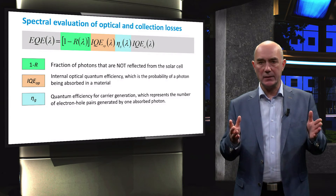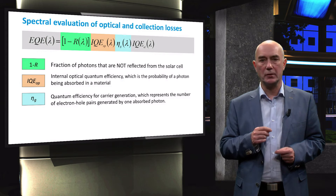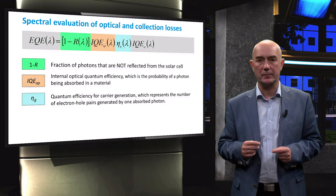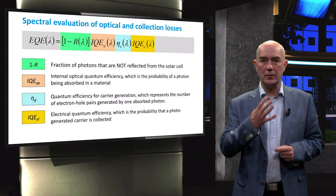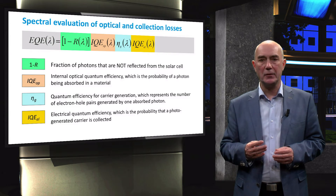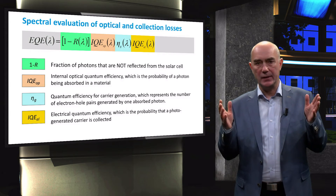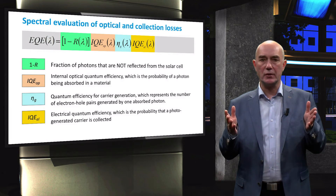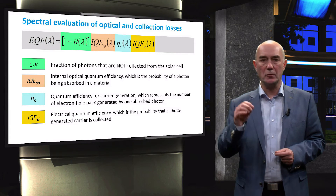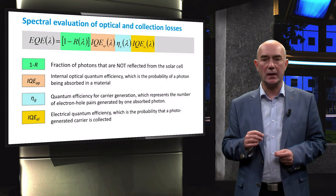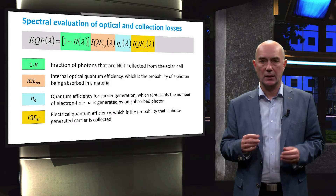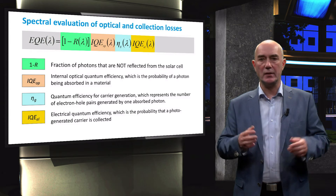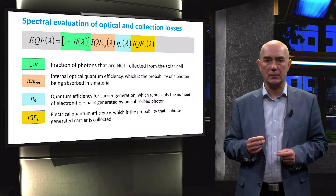The parameter eta-G is usually assumed to be one, meaning that an absorbed photon generates one electron-hole pair. The fourth term, IQE-EL, is the electrical quantum efficiency, which is the probability that a photo-generated carrier is collected. Recombination processes decrease the electrical quantum efficiency.